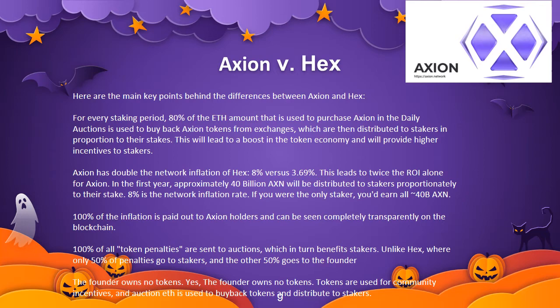Unlike HEX, where only 50% of penalties go to stakers and the other 50% goes to the founder, in Axion the founder owns no tokens. Tokens are used for community incentives, and auction fees are used to buy back tokens and distribute them to stakers.